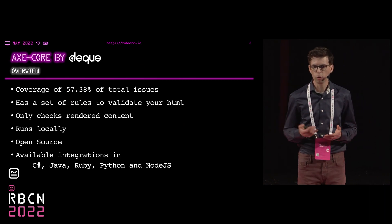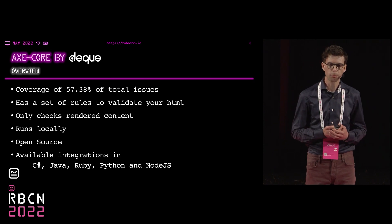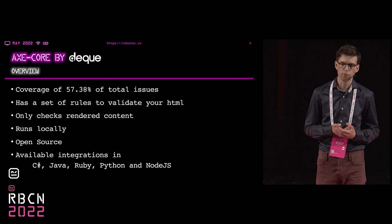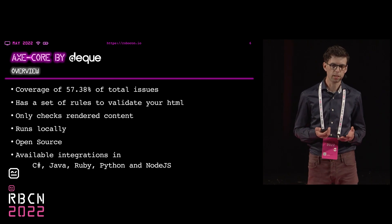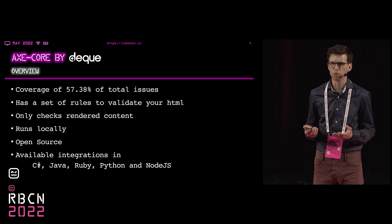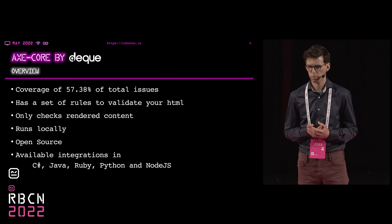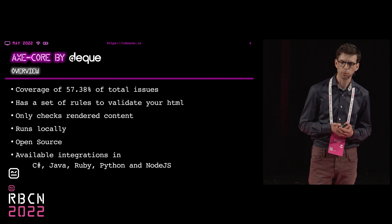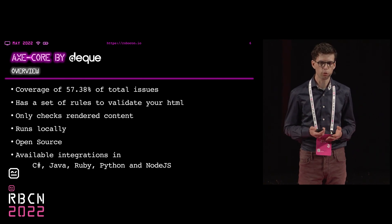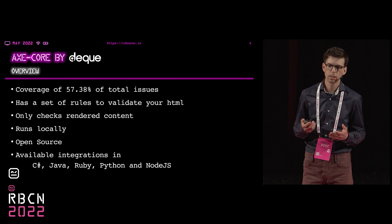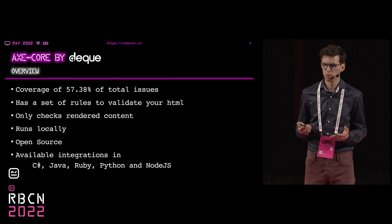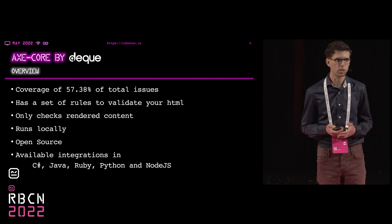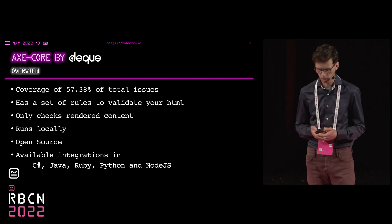There is a company called Deque and they have provided an open source tool called Axe-Core. Axe-Core aims to have a coverage of over 75% of the total issues that can be found on your web page. These rules validate the HTML and it only checks for rendered content — so only the HTML that is visible is checked by Axe-Core. It's open source and available in integrations in C#, Java, Ruby, Python and Node.js.